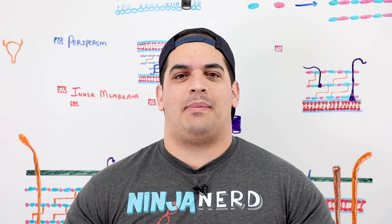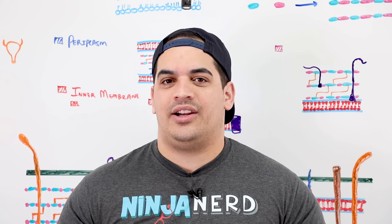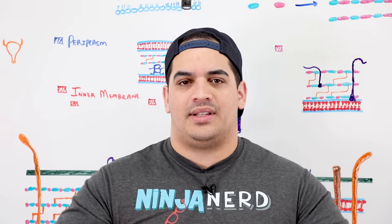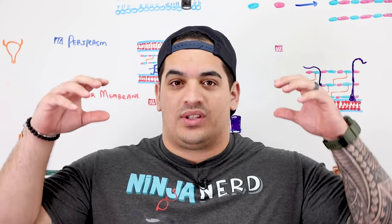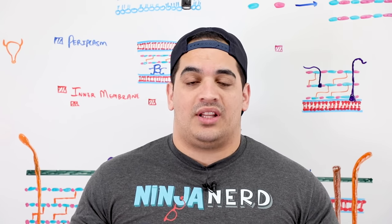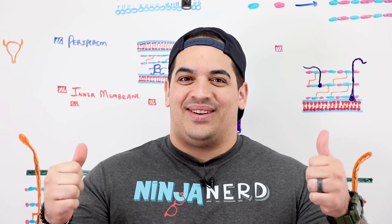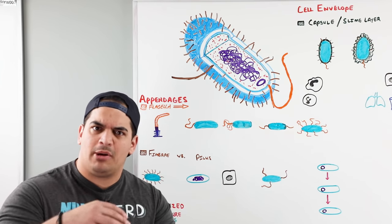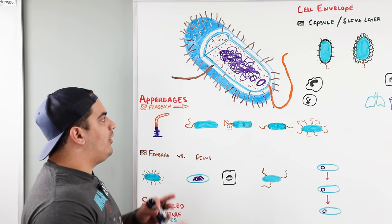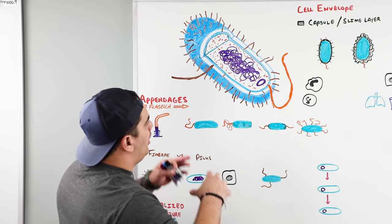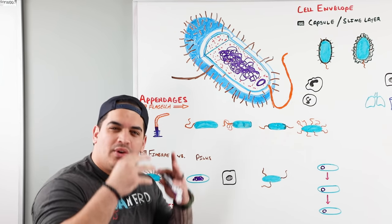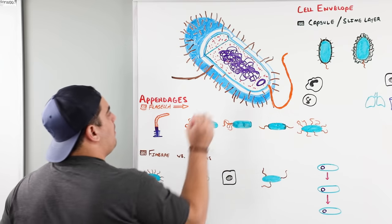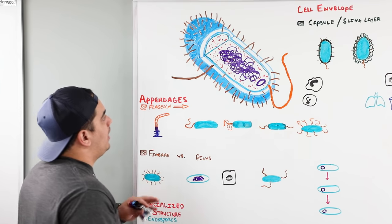In this video we're going to be talking about the structure and function of bacteria. When we look at a diagram of a bacteria, we should point out some of the different components. We're going to go into detail on what those structures are made up of, what they do, and their significance. Let's start with the basic anatomy of this bacteria.